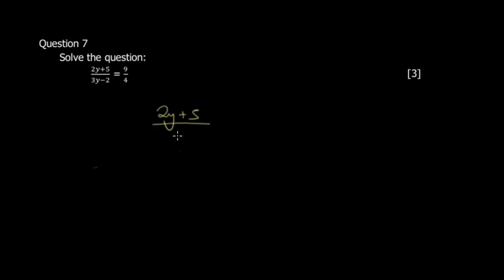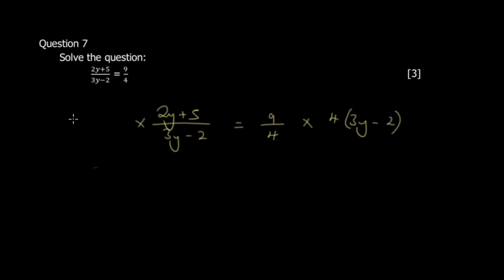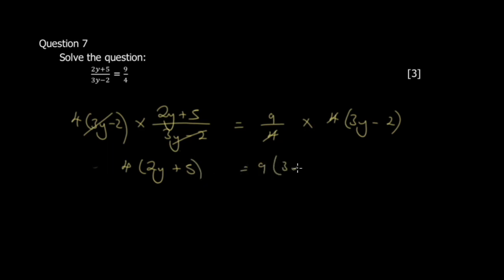The systematic basis for cross-multiplication is multiplying both sides by the lowest common multiple of the denominators, which is 4(3y − 2). The 4 cancels with the denominator 4, giving 4(2y + 5) = 9(3y − 2). This is where cross-multiplication comes from.